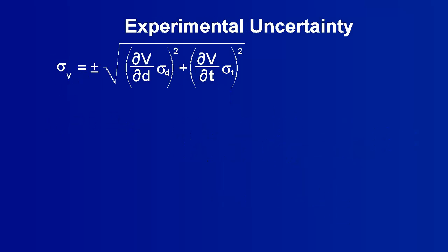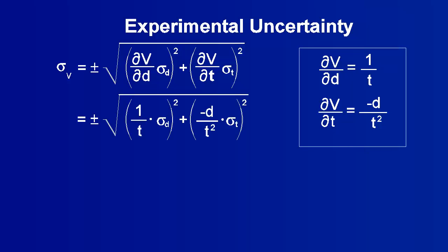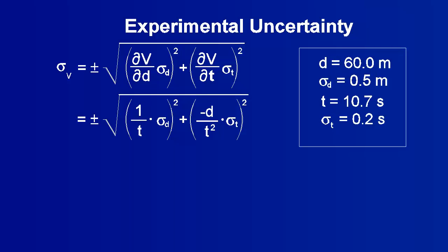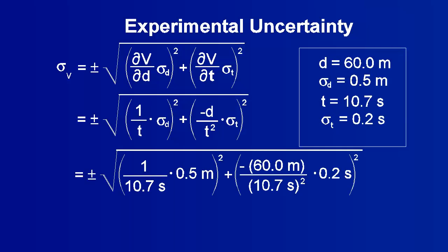Now the uncertainty of the velocity can be calculated. Recall the partial derivatives and substitute them in. Recall the time, distance, and their uncertainties. Substitute these values in as well.